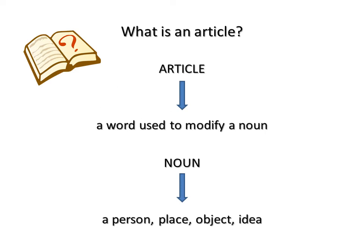What is an article? An article is a word used to modify a noun, which is a person, place, object or idea. Technically, the article is an adjective, which is any word that modifies a noun. Usually, adjectives modify nouns through descriptions, but articles are used instead to point out or refer to nouns.